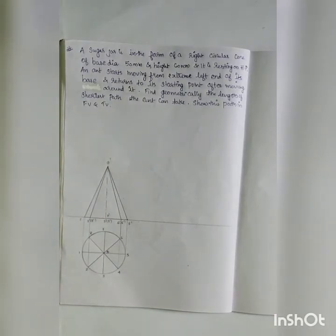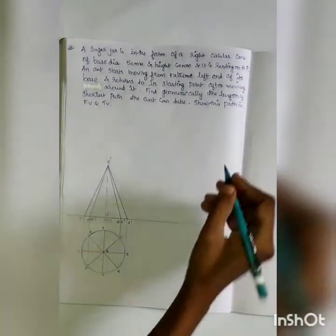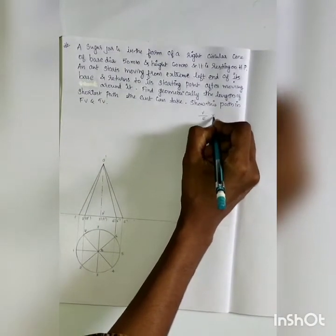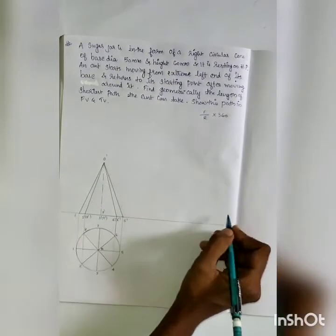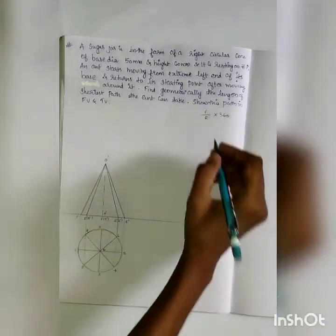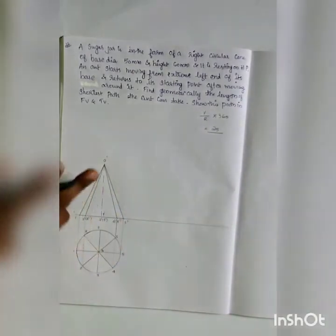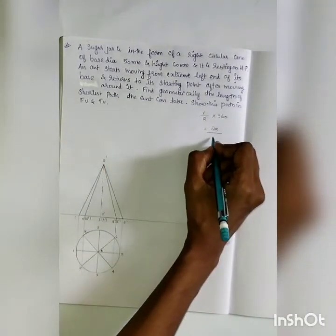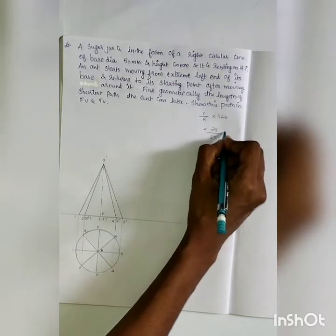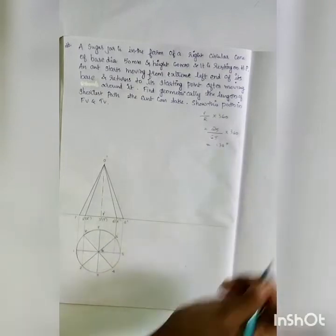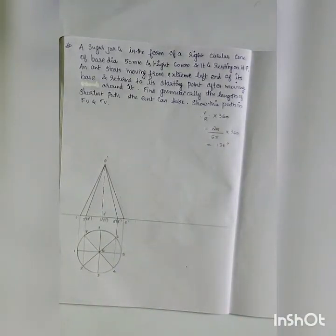Let's calculate the included angle. The included angle equation is θ = (r/R) × 360. Small r equals 25, capital R equals 65. So 25/65 × 360 equals 138 degrees. The included angle of the cone is 138 degrees.